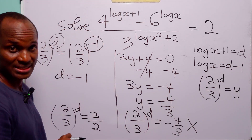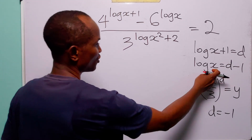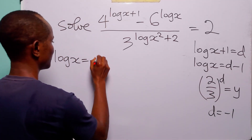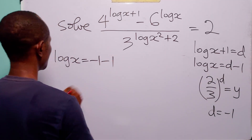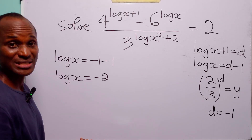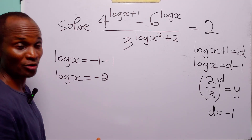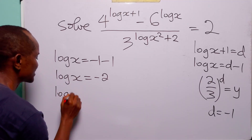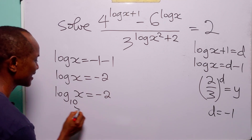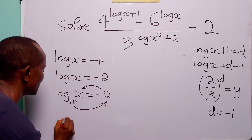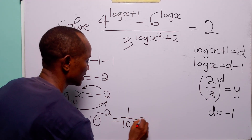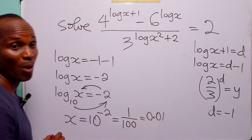Now that we have d equals minus 1, we go back to log x equals d minus 1, which gives log x equals minus 2. Since log without a specified base means base 10, this means log base 10 of x equals minus 2. Therefore 10 to the power minus 2 equals x, giving x equals 1 over 100, which is 0.01.